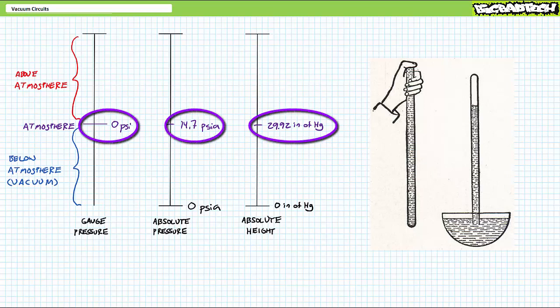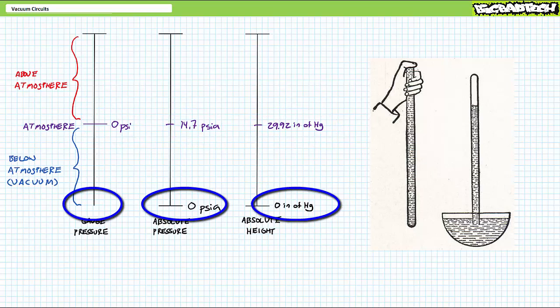At atmospheric conditions, i.e. 14.7 psi absolute or 0 psi gauge, the column of mercury was roughly 30 inches high. Theoretically, a perfect vacuum, i.e. 0 psi absolute or negative 14.7 psi gauge wouldn't support any mercury, giving us a lower bounds of 0 inches of mercury.